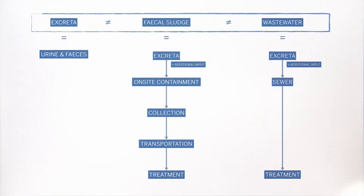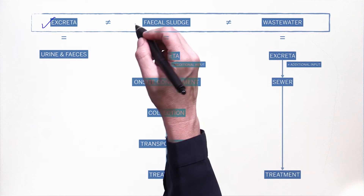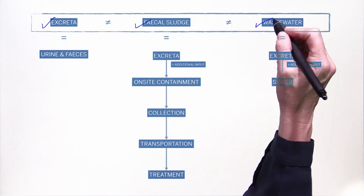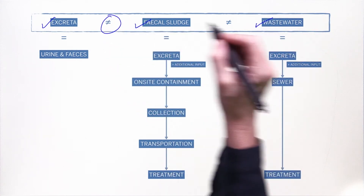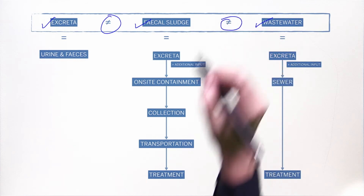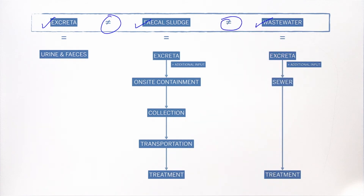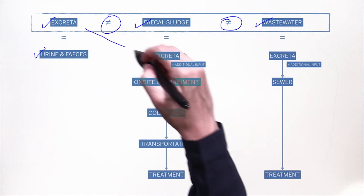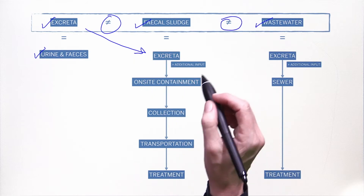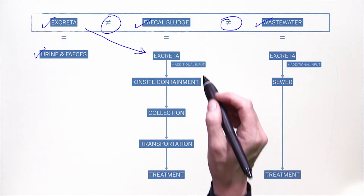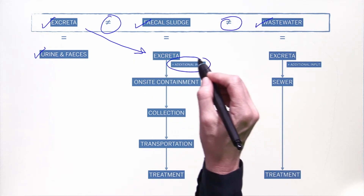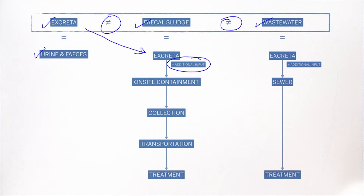To better understand what fecal sludge is, it is helpful to walk through three definitions: excreta, fecal sludge, and wastewater, and what's different about them. Excreta is urine and feces. This is different than fecal sludge, which contains excreta, but in addition includes anything else that goes into the on-site containment technology.